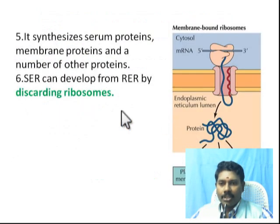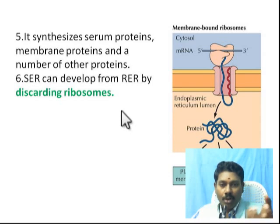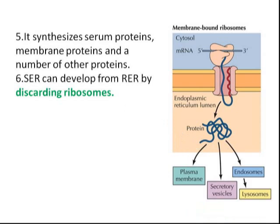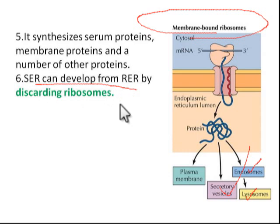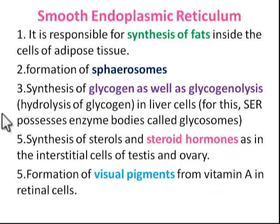The proteins synthesized by ribosomes bound to the ER include plasma membrane-bound proteins, lysosomal proteins, endosomal proteins, and secretory vesicle proteins — all synthesized by membrane-bound ribosomes. Smooth endoplasmic reticulum can be developed from rough ER by discarding its ribosomes, making it smooth endoplasmic reticulum.